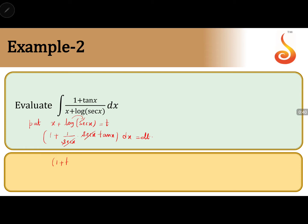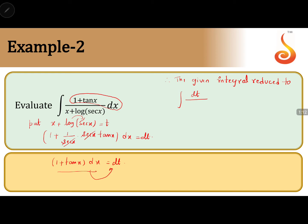We get the numerator (1 + tan x) dx = dt. Therefore, the given integral reduces to: integral of (1 + tan x) dx in the numerator, which is dt, divided by (x + log sec x), which is t.